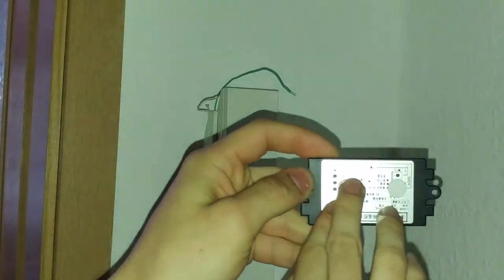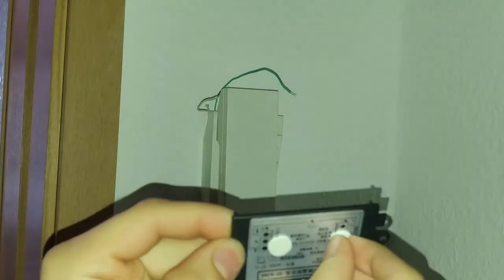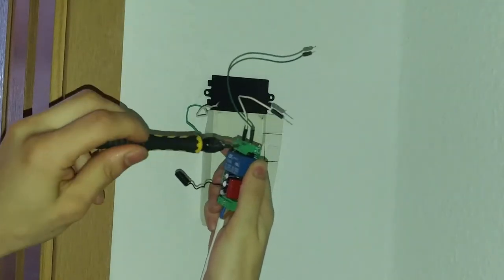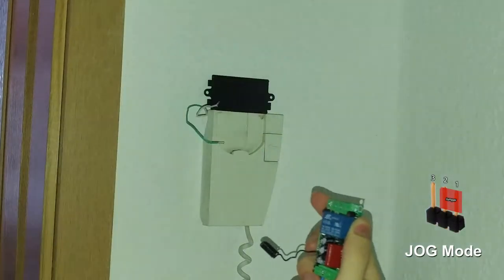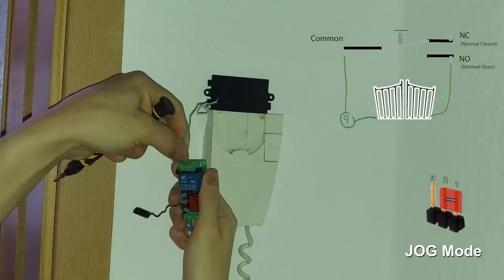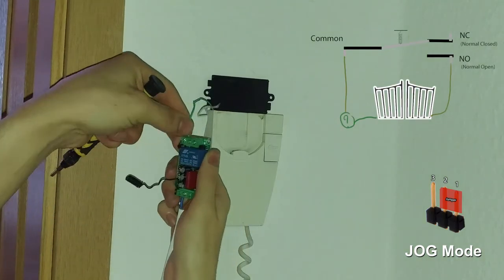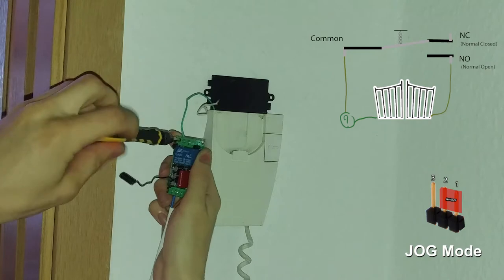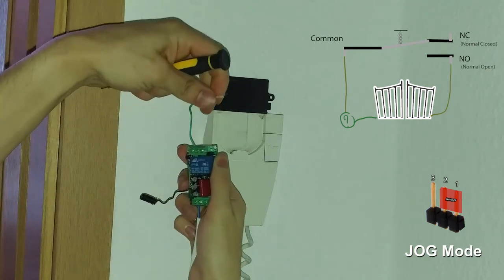After adding the two new wires to the intercom it was time to close it and connect them to our receiver. We will be using this on jog mode as we only want the door to be open when the button is being pressed. So if you're doing the same don't forget to recheck if the jumper is in the correct position.